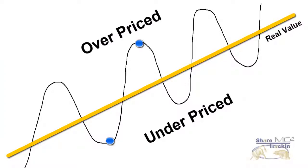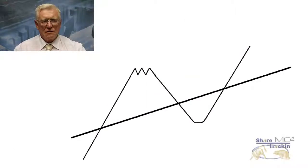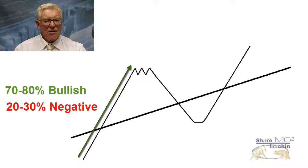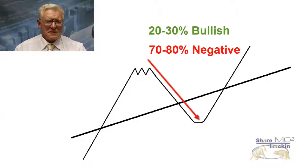Now let us focus on a single cycle. When the share is rising steadily then about 70 to 80% of investors are bullish and only 20 to 30% are negative and the opposite of course is true when the market is falling.